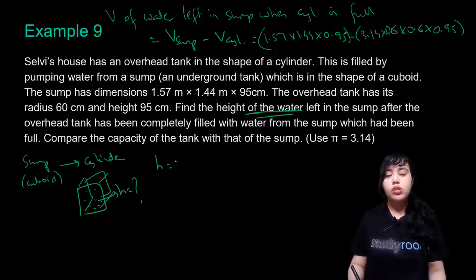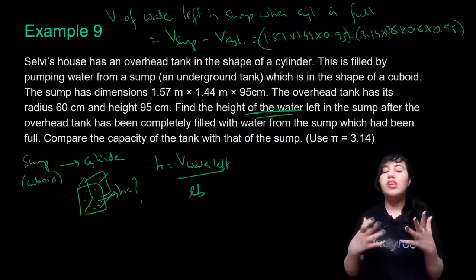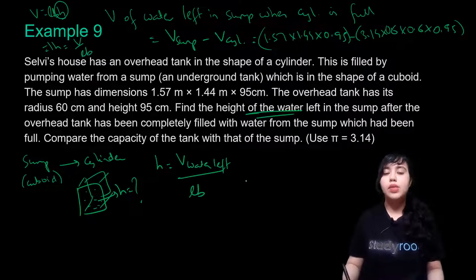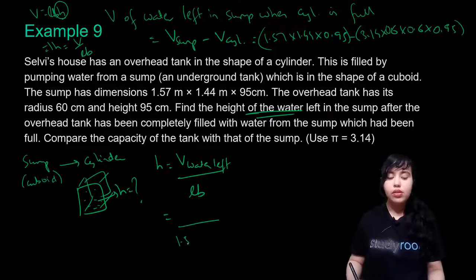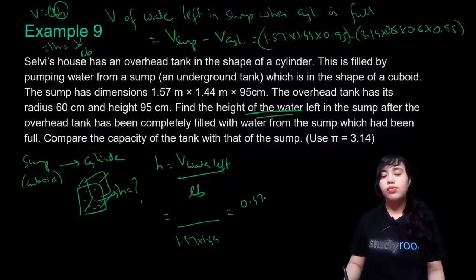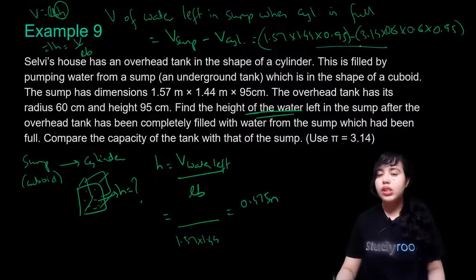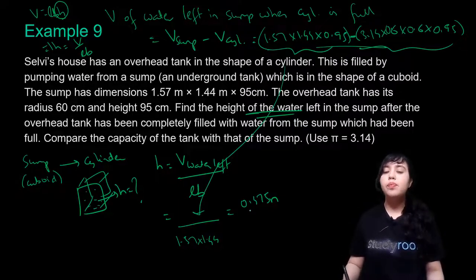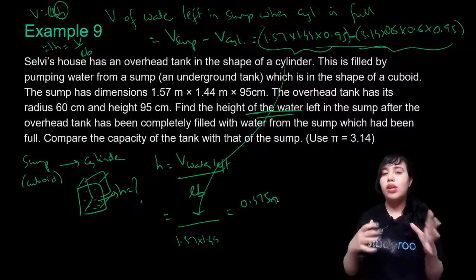The height of water left in the sump is calculated as: H = Volume of water left ÷ (Length × Breadth), because for a cuboid V = LBH, so H = V/(LB). Substituting: divide the remaining volume by 1.57 × 1.44. Solving gives the height as 0.475 meters.